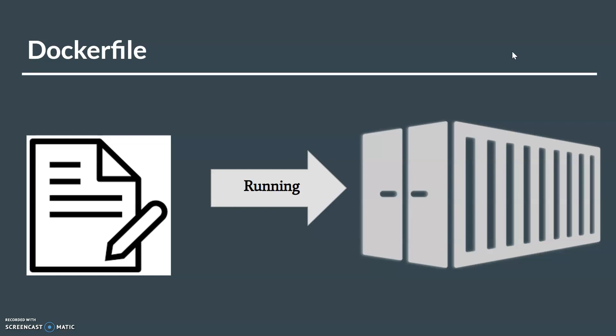Similarly, from one image you can create multiple containers like objects. While your image is in a running state, it is called a container. The Docker image in its running state is called a Docker container — it is the same as object-oriented programming.